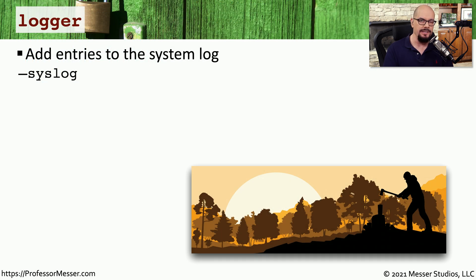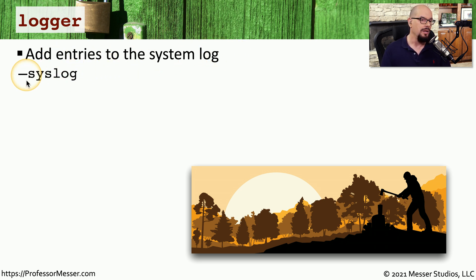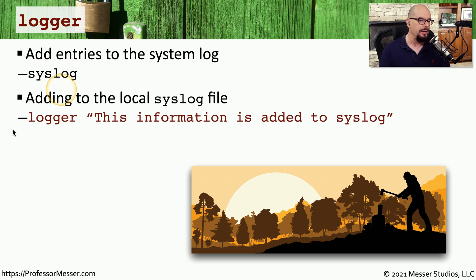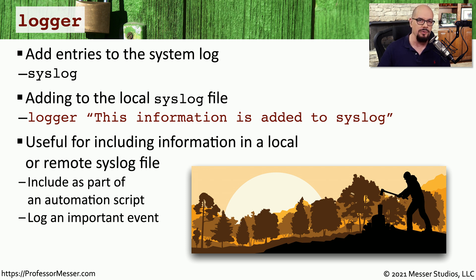There may be times when you're working on a system and you want to document information in a log file — to designate when a particular series of steps may be starting or ending, you may want to add additional details into the logs. One way to do that is to use the logger command. The logger command will add additional information into the system log, which is commonly the file syslog. For example, you could use logger with a message in quotes, and that entire bit of information will be written to the syslog file. This is very useful if you're running a script and want it to log information so you can grep or find it later.